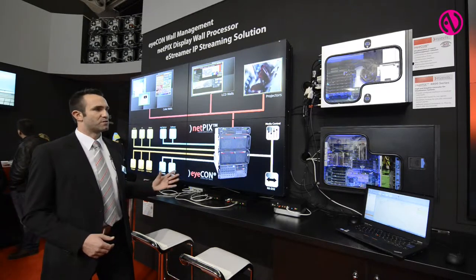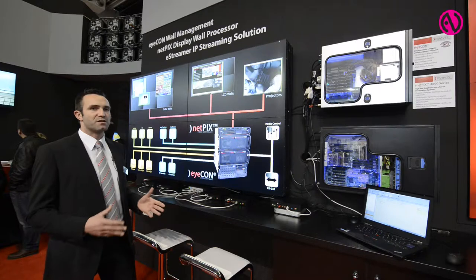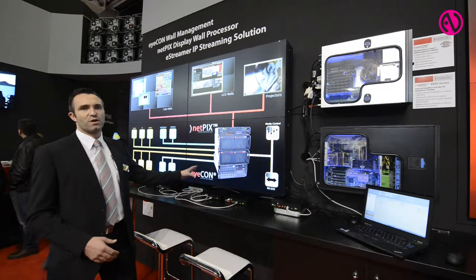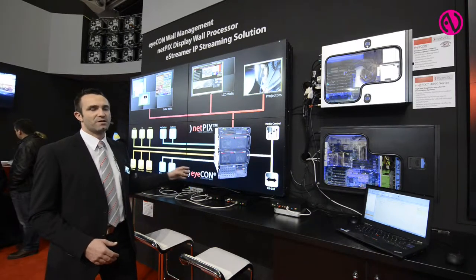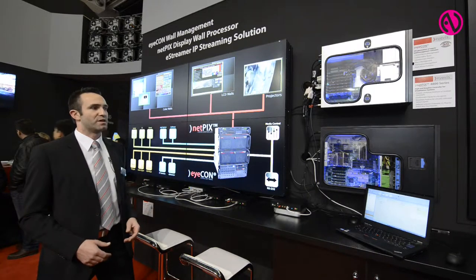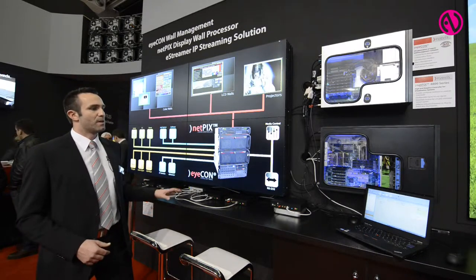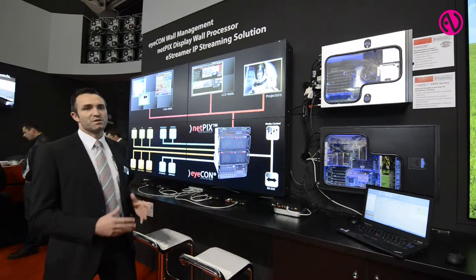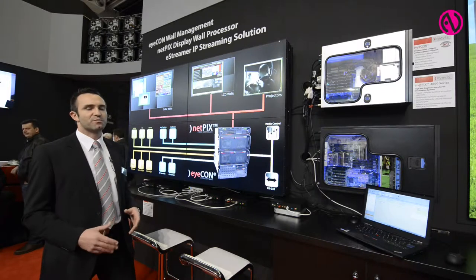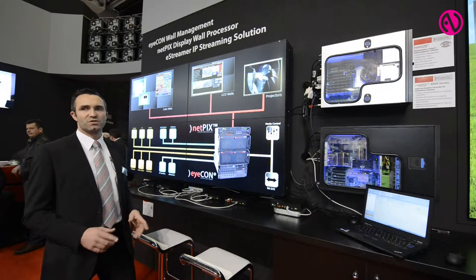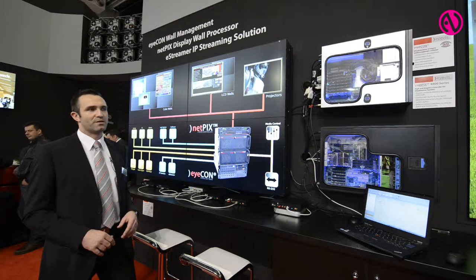What we use to operate the systems for the administration of all incoming signals is the ICON software, which is now in its fifth generation. It's a very famous and popular software used in the industry, especially in control room applications. ICON version 5 comes with a couple of new features like multi-mouse, so you can have various mouse cursors using the same system on one video wall.